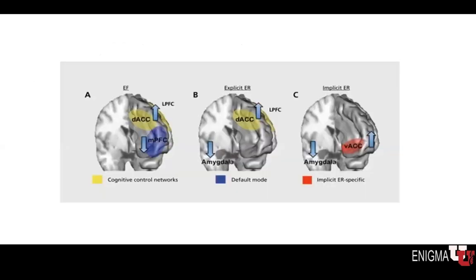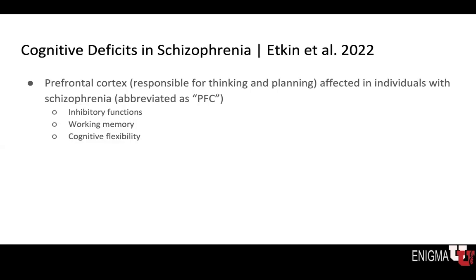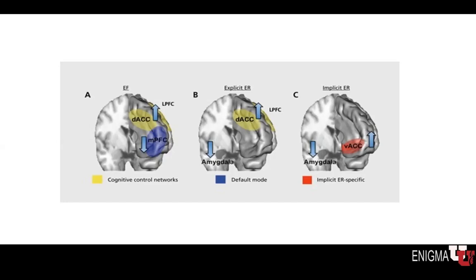This is from the Etkin et al. 2022 paper, which I will be discussing for the majority of this talk. From the Etkin paper, there was a graphic that beautifully illustrated some of the cognitive control and executive functioning networks. In graphic A, areas of cognitive control networks are disrupted in executive functioning: the dorsal anterior cingulate cortex, or DACC, shows increased functioning, while we see decreased functioning in the medial prefrontal cortex. In figure B, regarding explicit emotional regulation, we see a decrease in amygdala function but an increase in the functioning of the DACC, showing the functioning of explicit emotion regulation with regards to the default mode network.